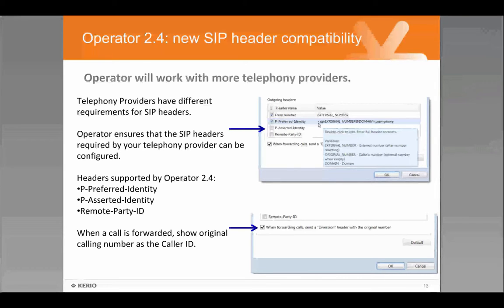We've added support for more SIP headers in Operator 2.4, which allows Operator to be deployed in even more environments than before. It will work with more telephony providers because different providers have different SIP header requirements. We now support Preferred Identity, Asserted Identity, and Remote Party ID. Supporting these headers opens up compatibility with more telephony providers than ever before.